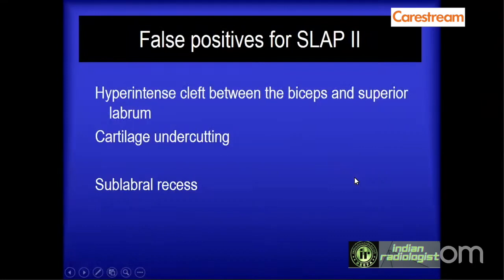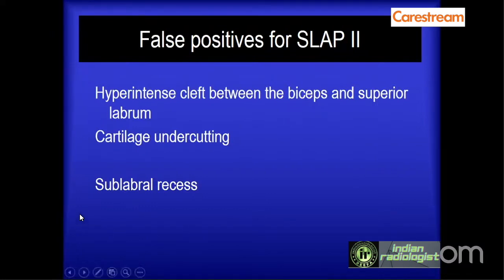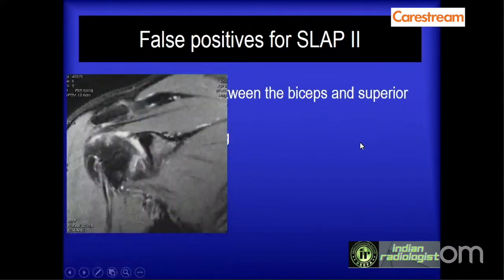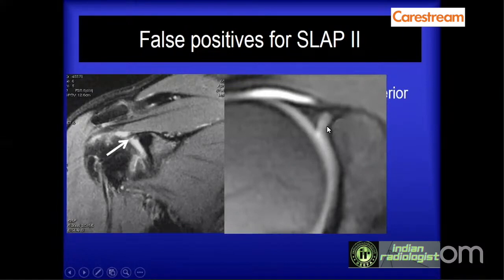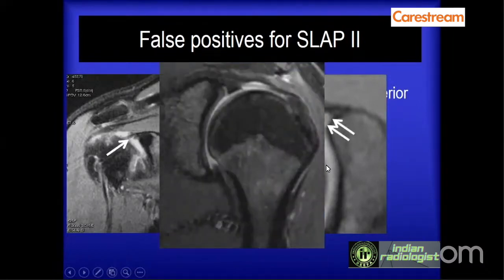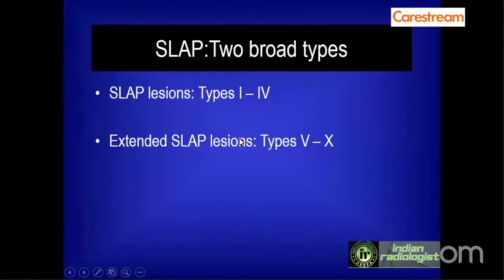There are a couple of false positives for SLAP 2 type of tear. You can have a hyperintense cleft between the biceps and the superior labrum, cartilage undercutting, or a sub-labral recess — each of which can be mistaken for a SLAP 2 tear. The small cleft between the biceps tendon and superior labrum can simulate a tear, and the cartilage continuing below the labrum can be mistaken for a tear, though its signal is far less than the fluid in the sub-labral recess.